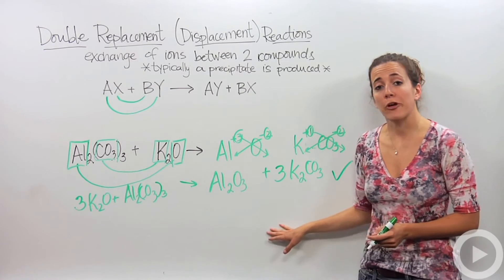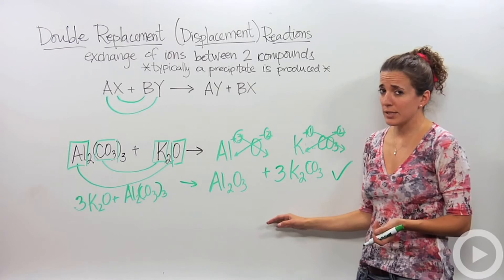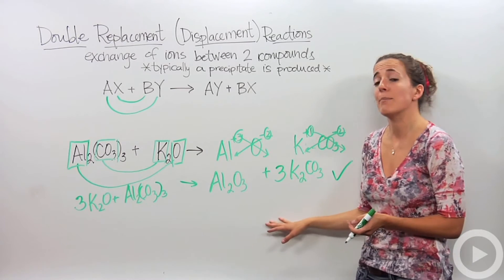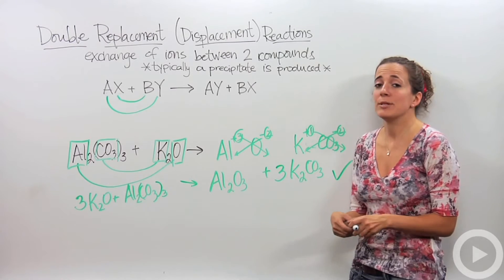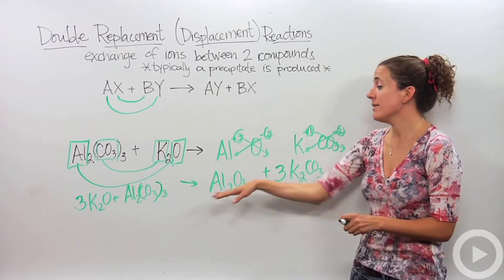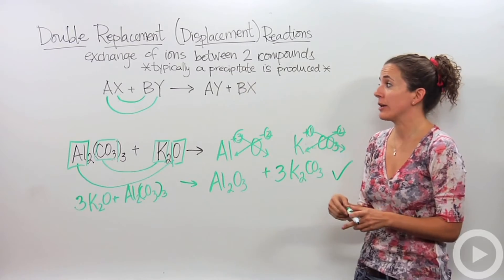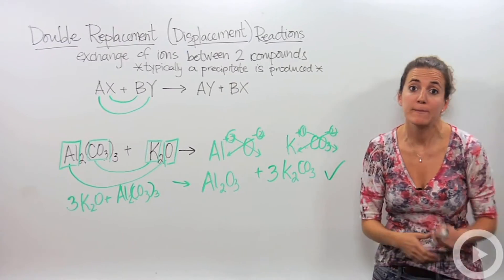Now we actually can take this a step further and do net ionic equations, those are actually the next step in dealing with double displacement reactions. But that's going to be shown in another video. So let's actually see this in action, we said that a precipitate occurs, so we're actually going to see what a precipitate looks like.